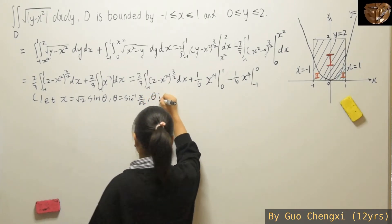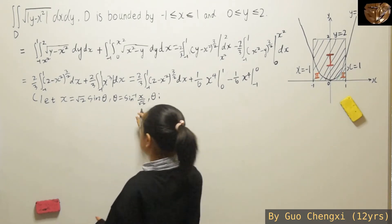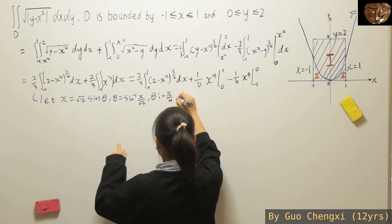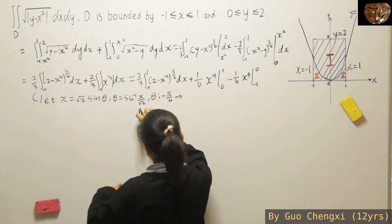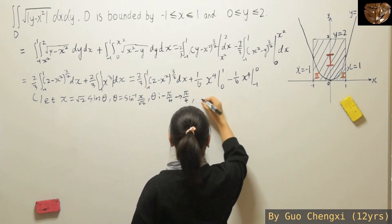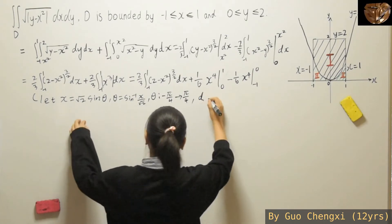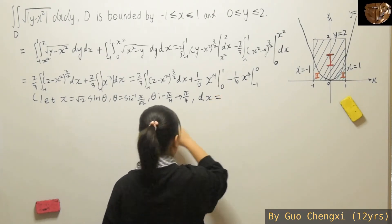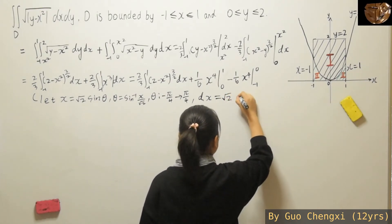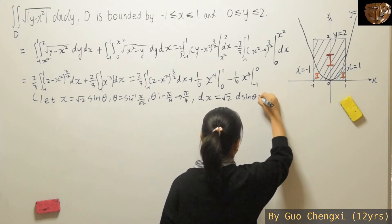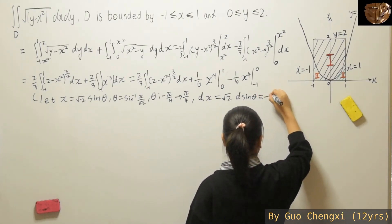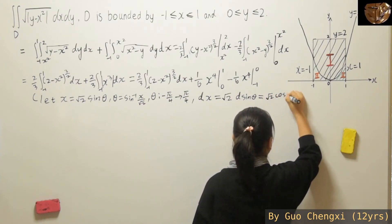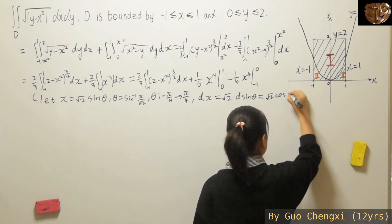So the range for theta is from negative pi over 4 to pi over 4. Now we differentiate both sides to find dx. So dx equals square root 2 times cosine theta, d theta.